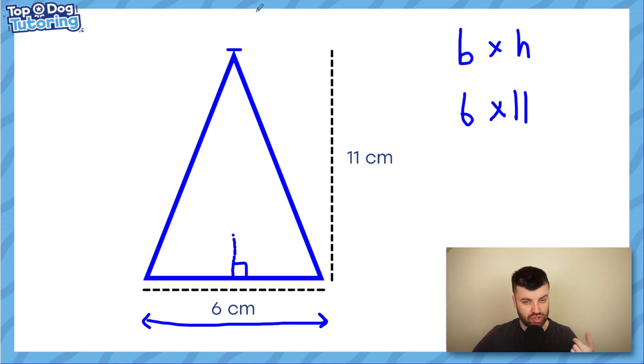Now to work out the area of the triangle, we need to do half base times height. I'm going to prove that to you in a second. But for now, all you need to know is you work out half of six times 11. Two ways you can do this. You can do half of six is three, and just do three times 11 equals 33.